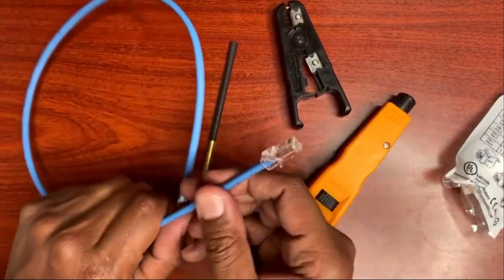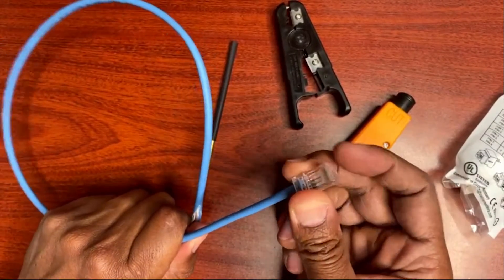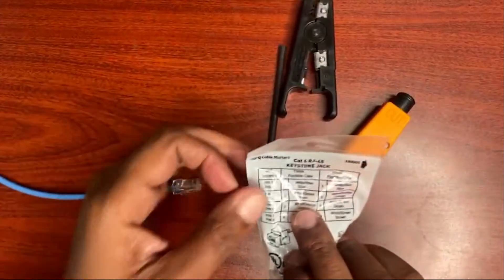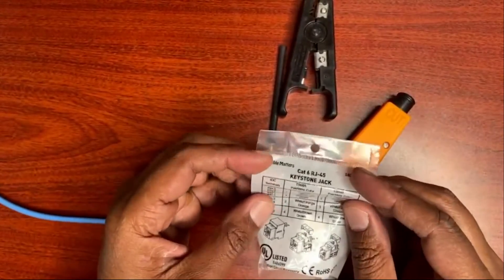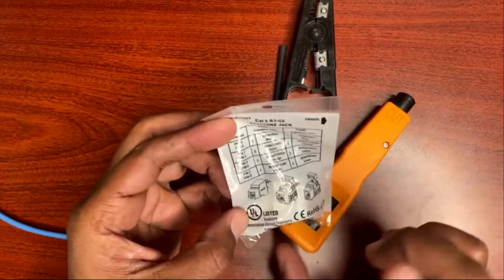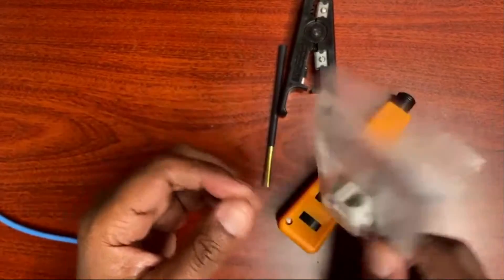If you watched last week's video, I went through the tutorial showing you how to do the male end. Now I'm going to show you how to do what we call the female end, which is the CAT6 RJ45 keystone jack cable, and how to terminate this.